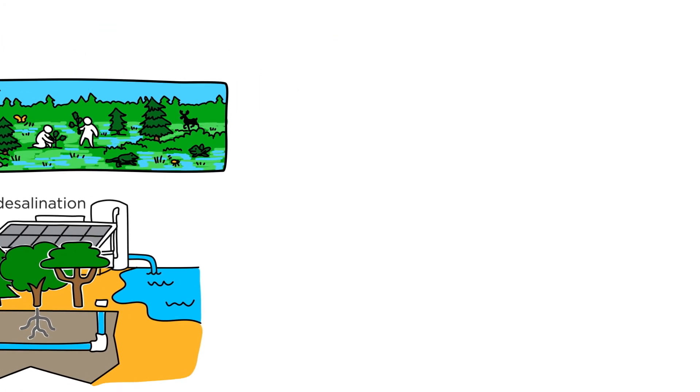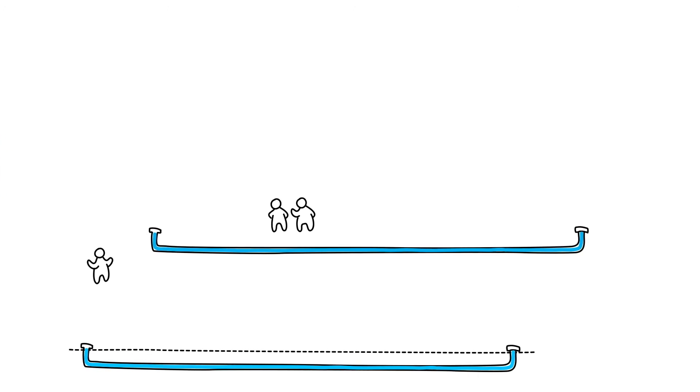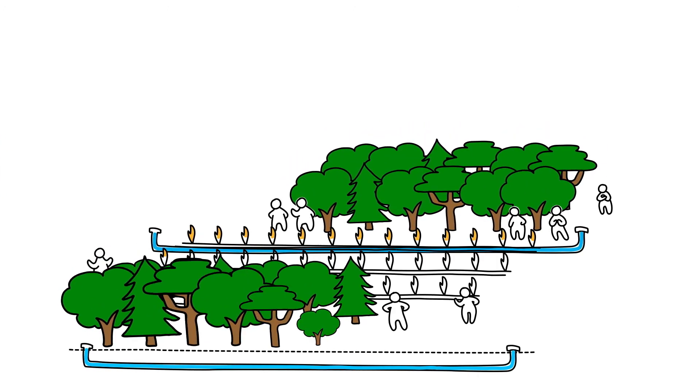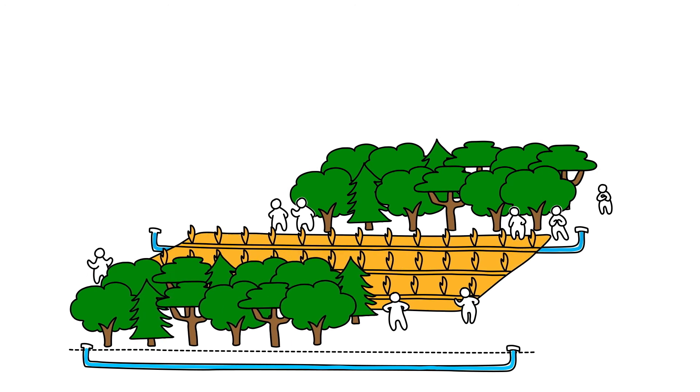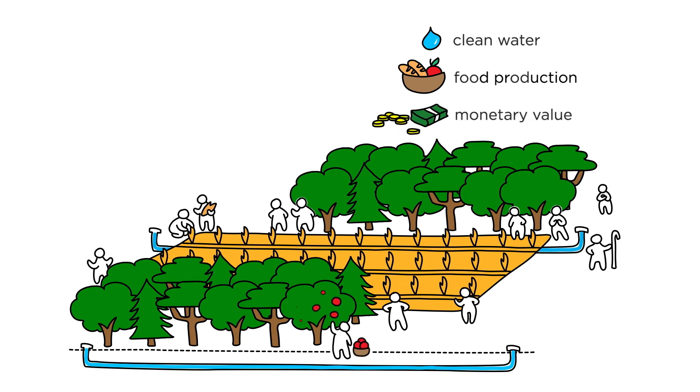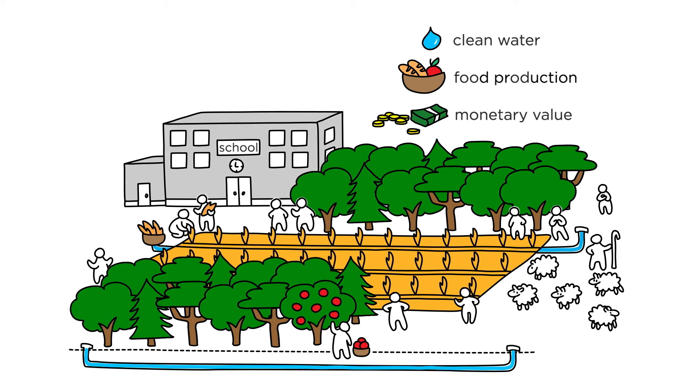3. Carbon farming benefits local residents, too. Large tree plantations can be combined with crop farming, leading to an increase in clean water, food production, and monetary value. This could even ease the living conditions of populations who might otherwise be forced to migrate.